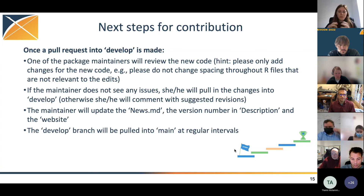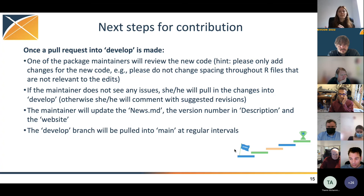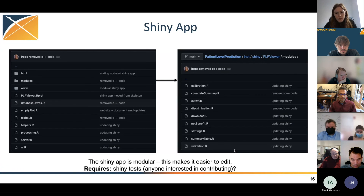If a pull request includes many unrelated file changes, the reviewer will likely send it back to clean that up. If the maintainer sees no issues, they'll pull it into develop. If there are potential issues, you'll get comments and suggested revisions, and after those changes it will be pulled in. The maintainer will then update the news, description, version number, and website. At regular intervals the develop branch gets pulled into main, and that's when the package gets released and your new features become available to users.